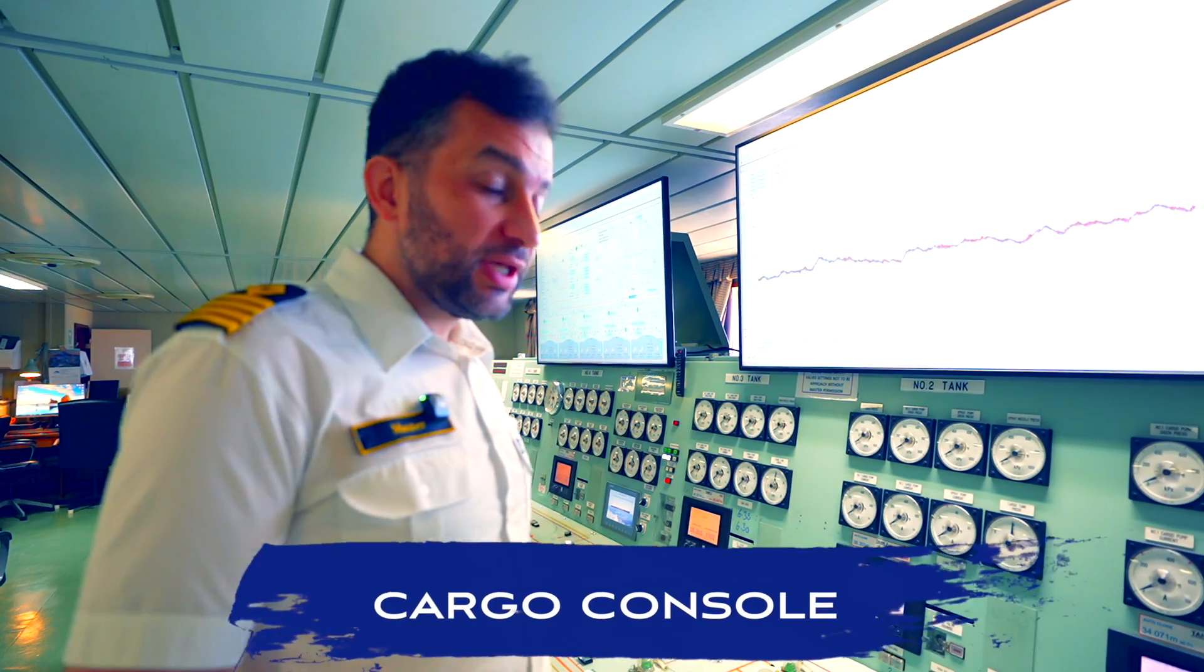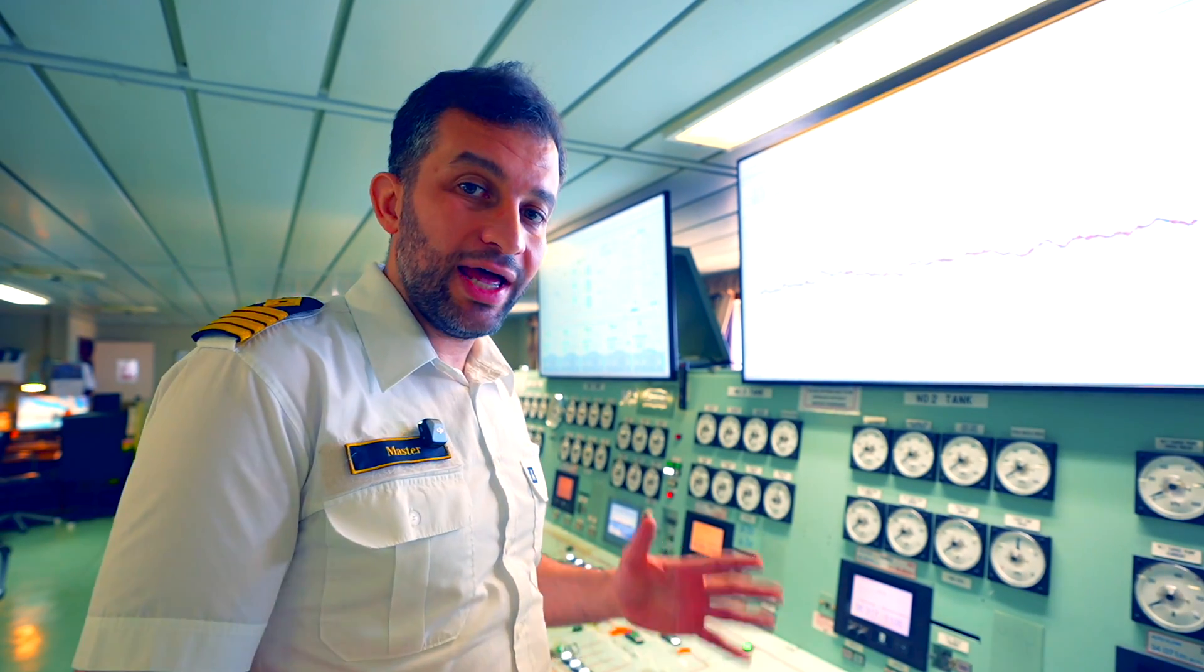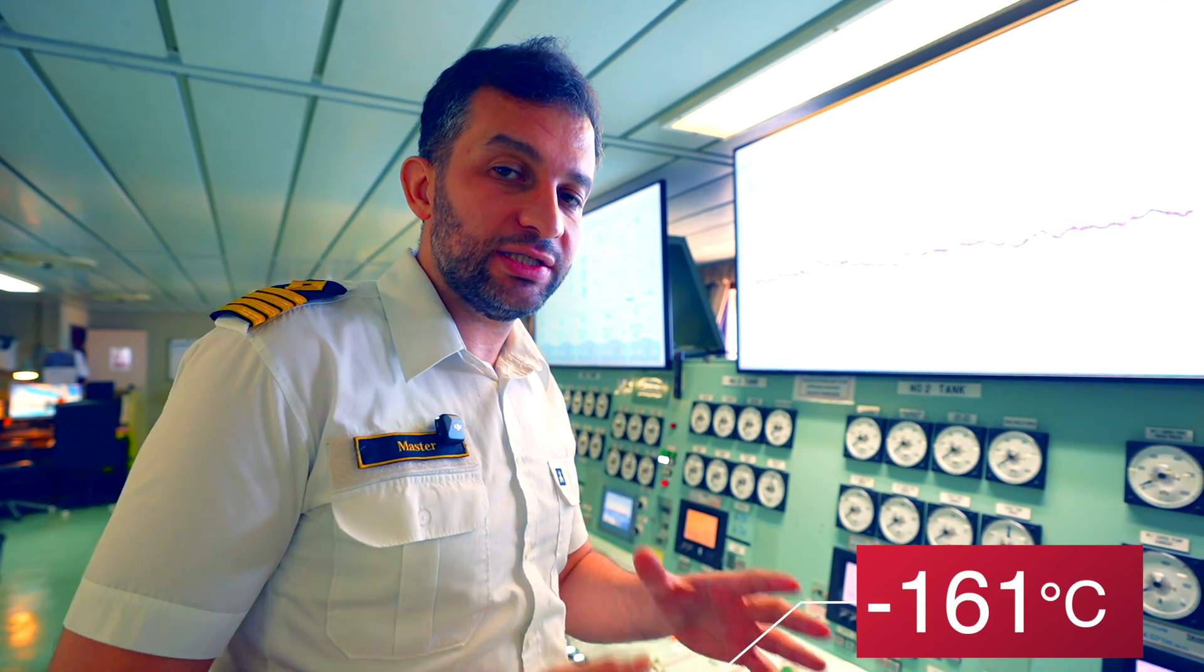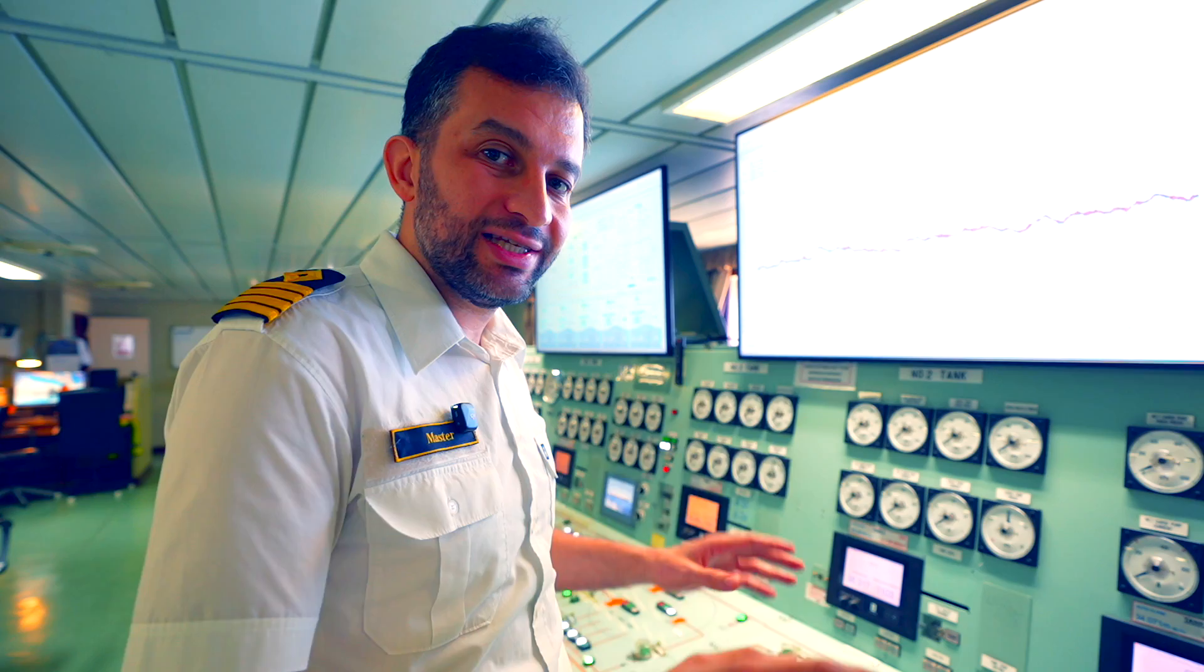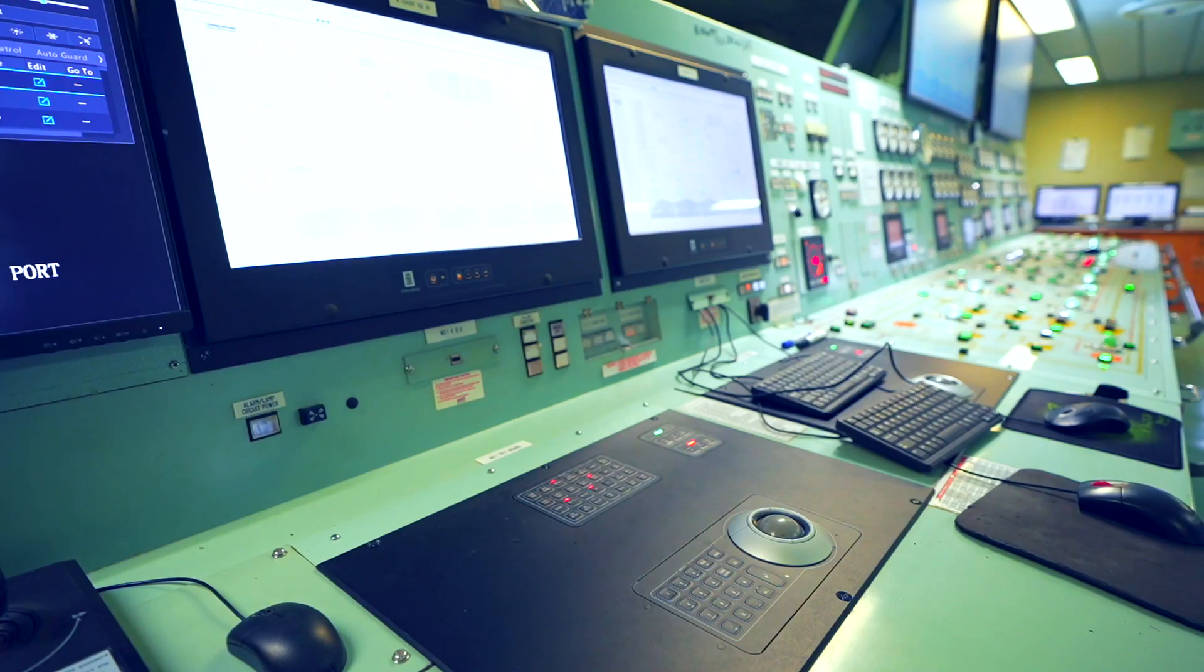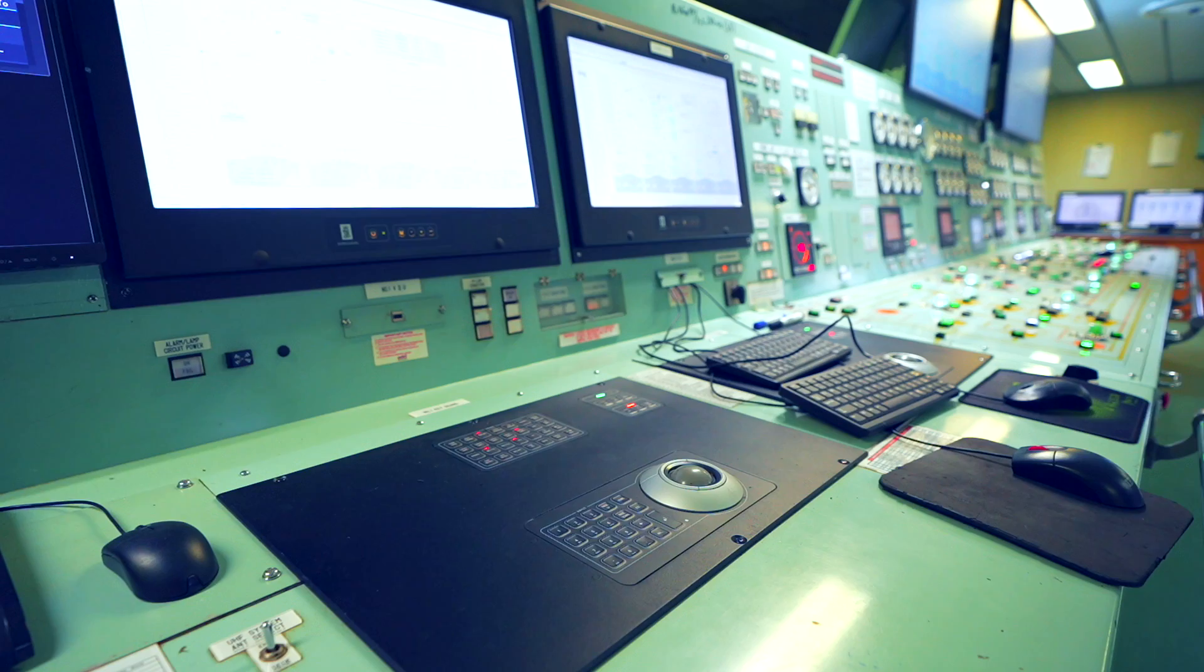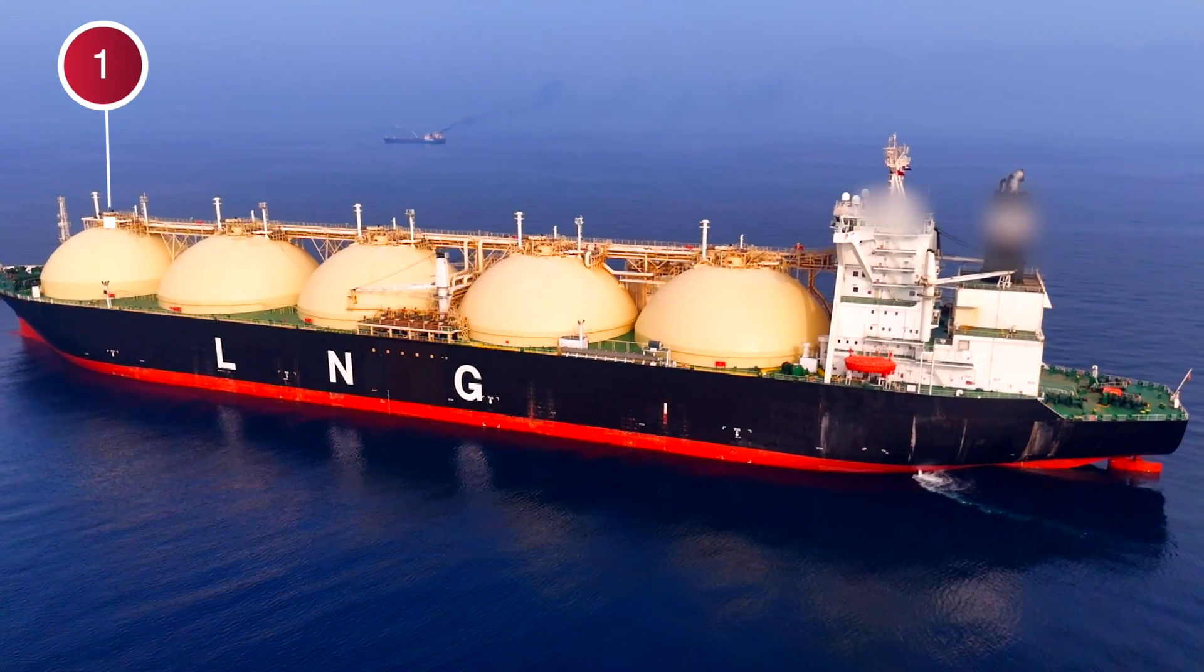The first panel is the cargo console where we load and discharge LNG cargo and do gas management. The LNG at minus 160 degrees Celsius is continuously evaporating so we need to manage the boil-off generated from our cargo tanks. All these operations we do in this panel. From these two screens the chief mate or gas engineer manages loading, discharging operations of the boil-off gas. This ship has five tanks.